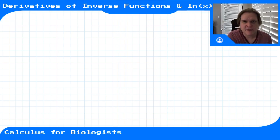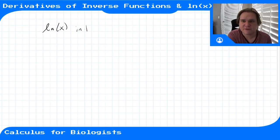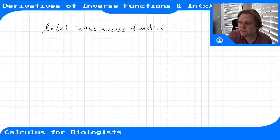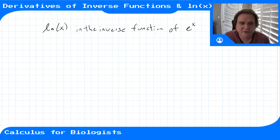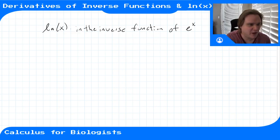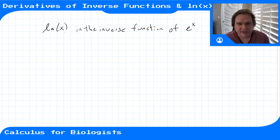Recall that ln of x, natural log of x, is the inverse function of e to the x. We'll review inverse functions and show how to take a derivative of an inverse function using the chain rule, and then apply that to natural log of x to get a nice rule for how to take the derivative of ln of x.